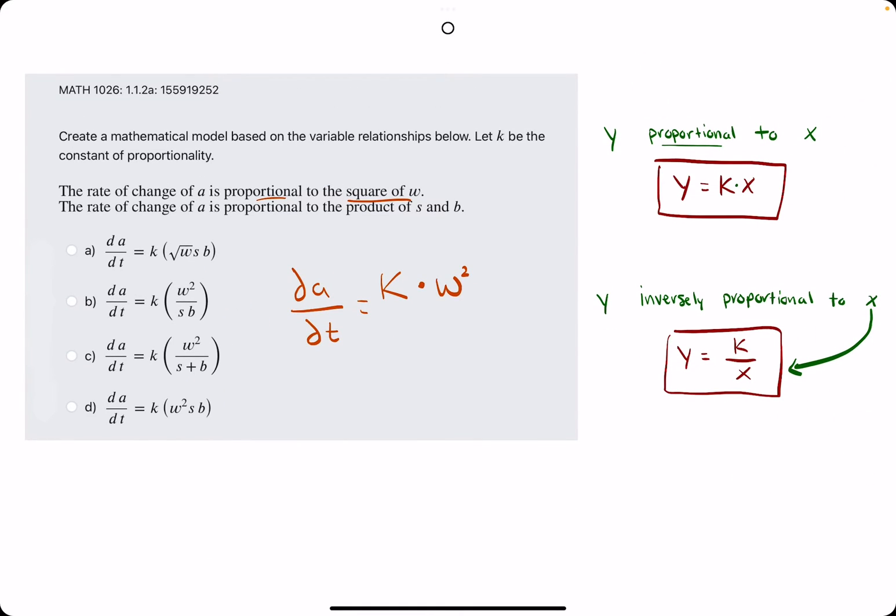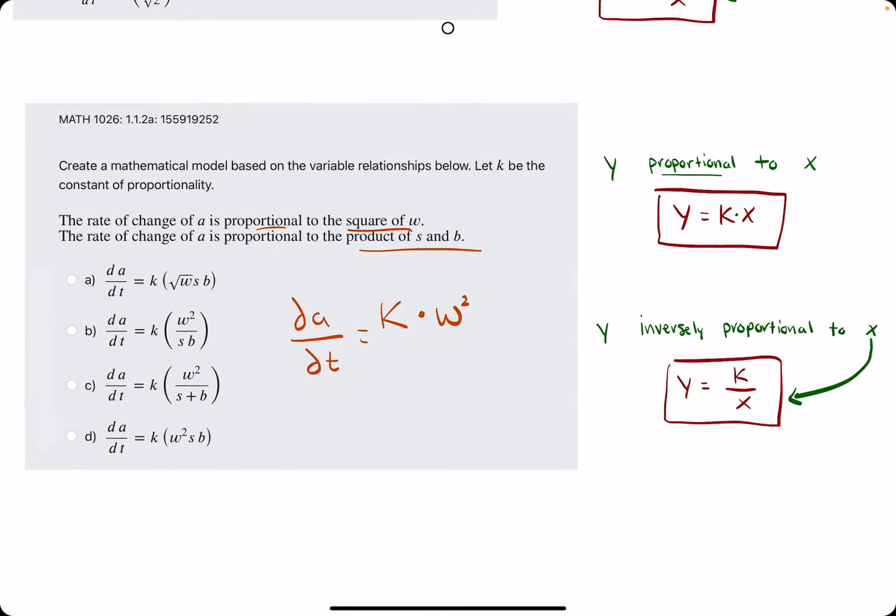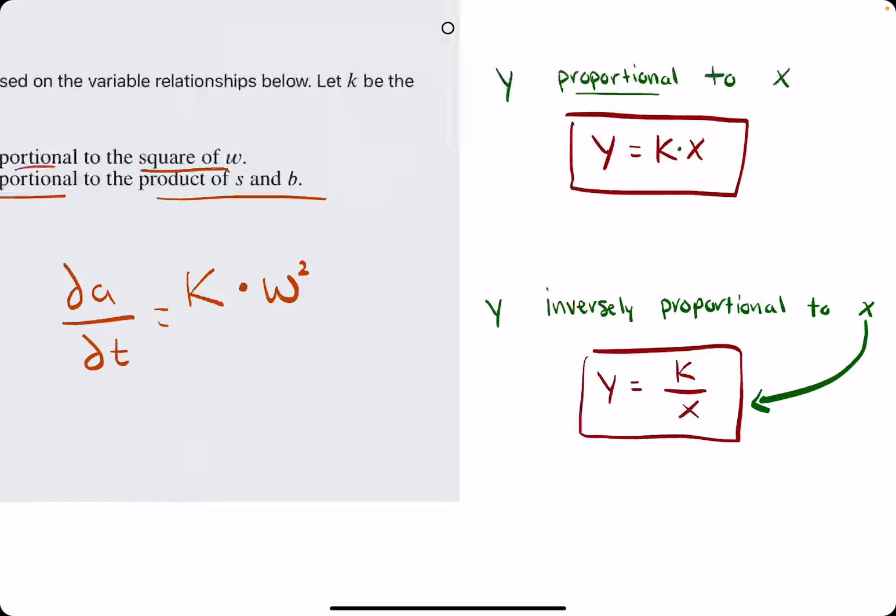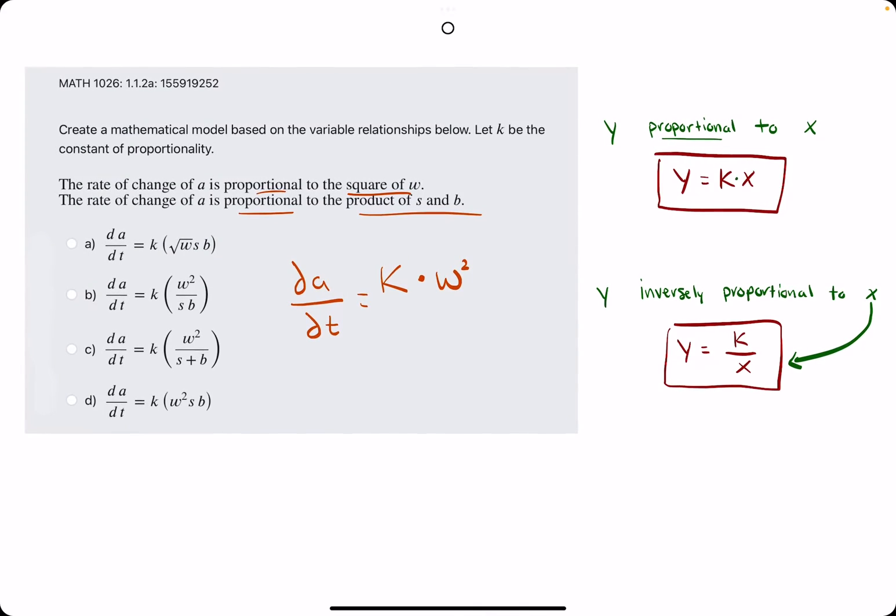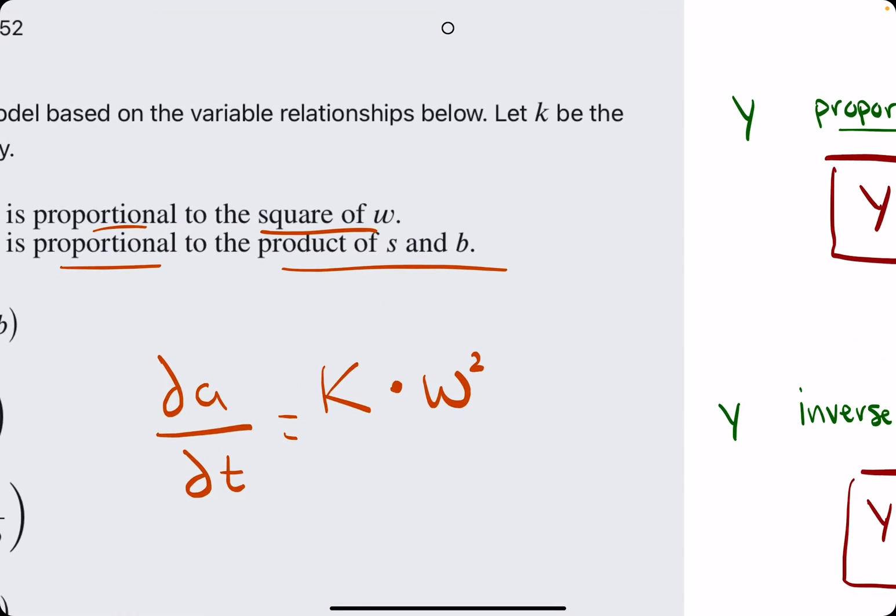K times W squared. Then they say the rate of change of A is proportional to the product of S and B. So proportional again, which means we're not dividing by anything, which we would do if it said inversely proportional, but it's just proportional.